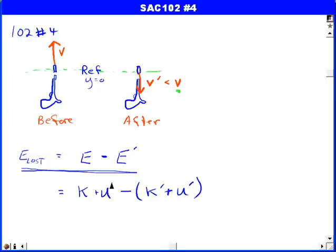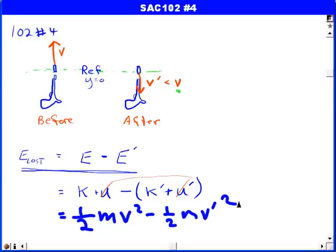But under those circumstances, the potential energy is zero in both cases. So our energy loss is just the kinetic energy minus the initial kinetic energy minus the final kinetic energy. That's one-half MV squared minus one-half MV prime squared.